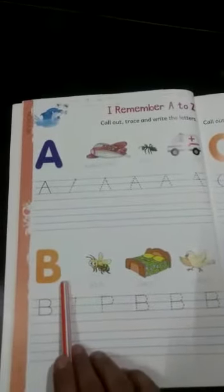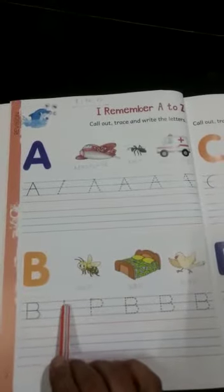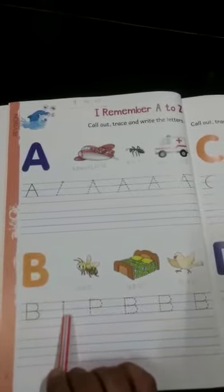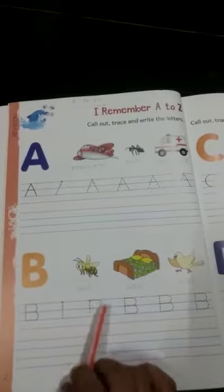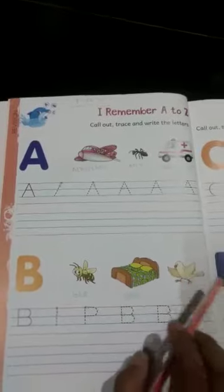And next B, capital B. First, this is the starting point. Towards the arrow, we can join the dotted line and make B. B for Bee, Bed and Bird.